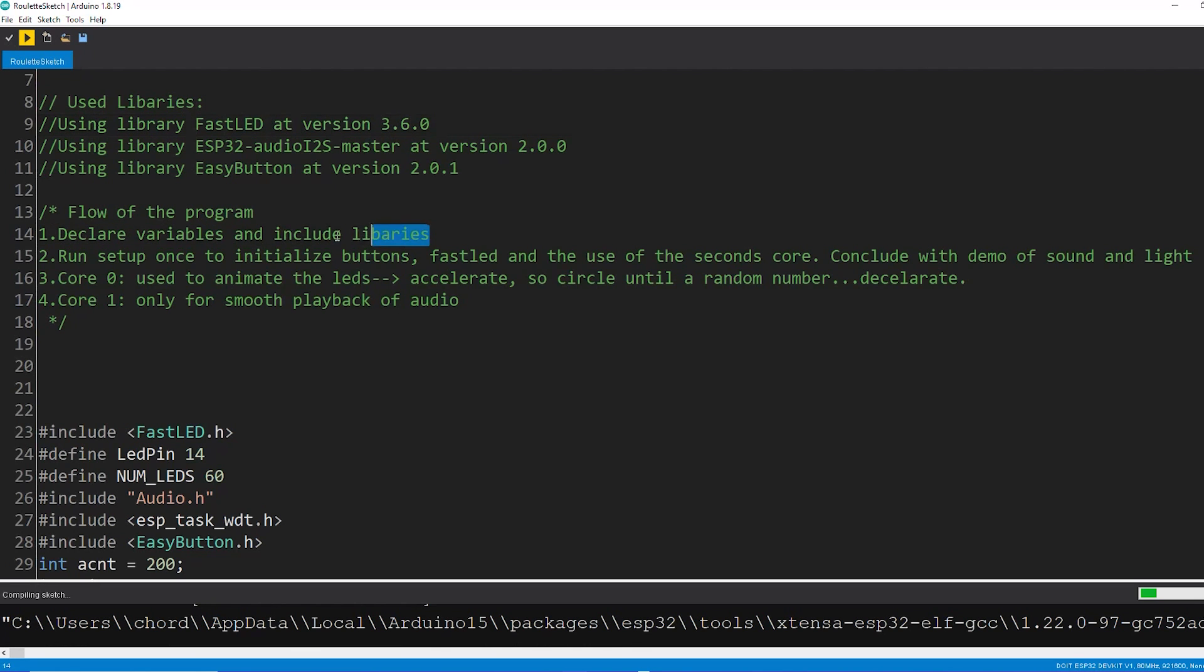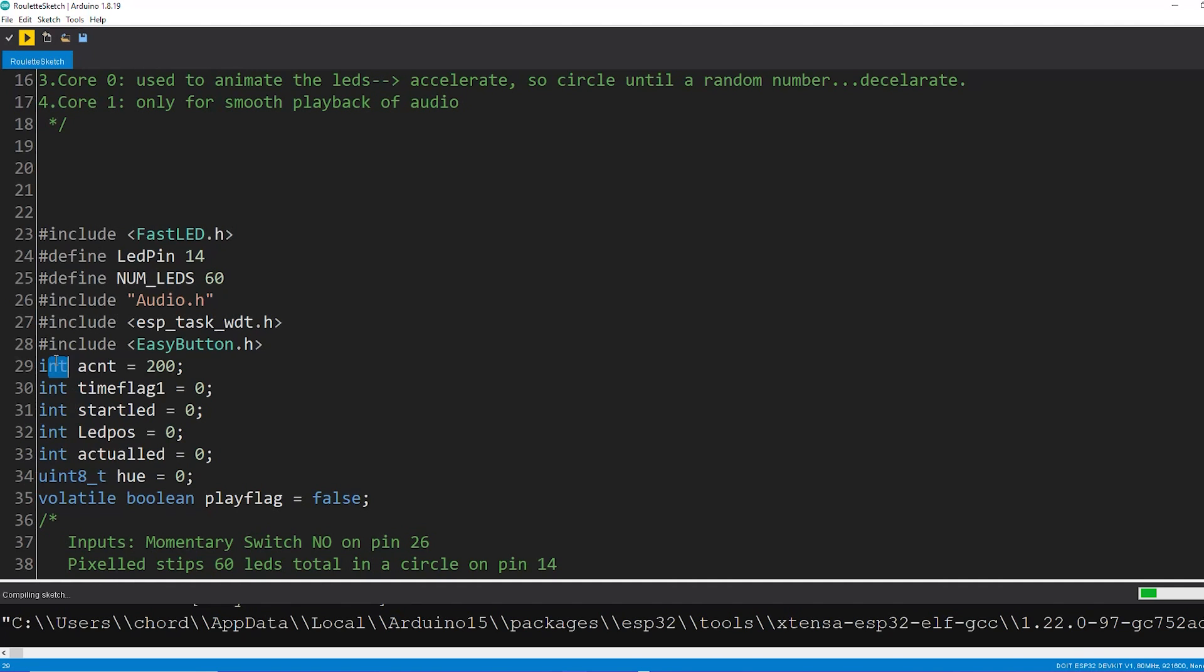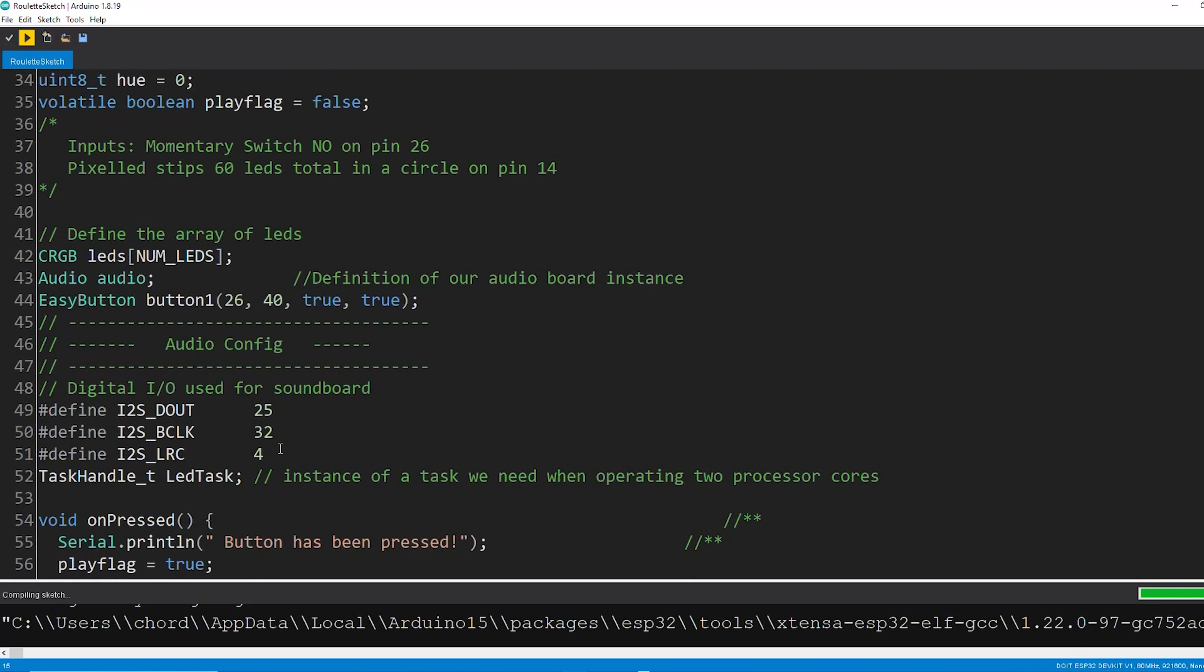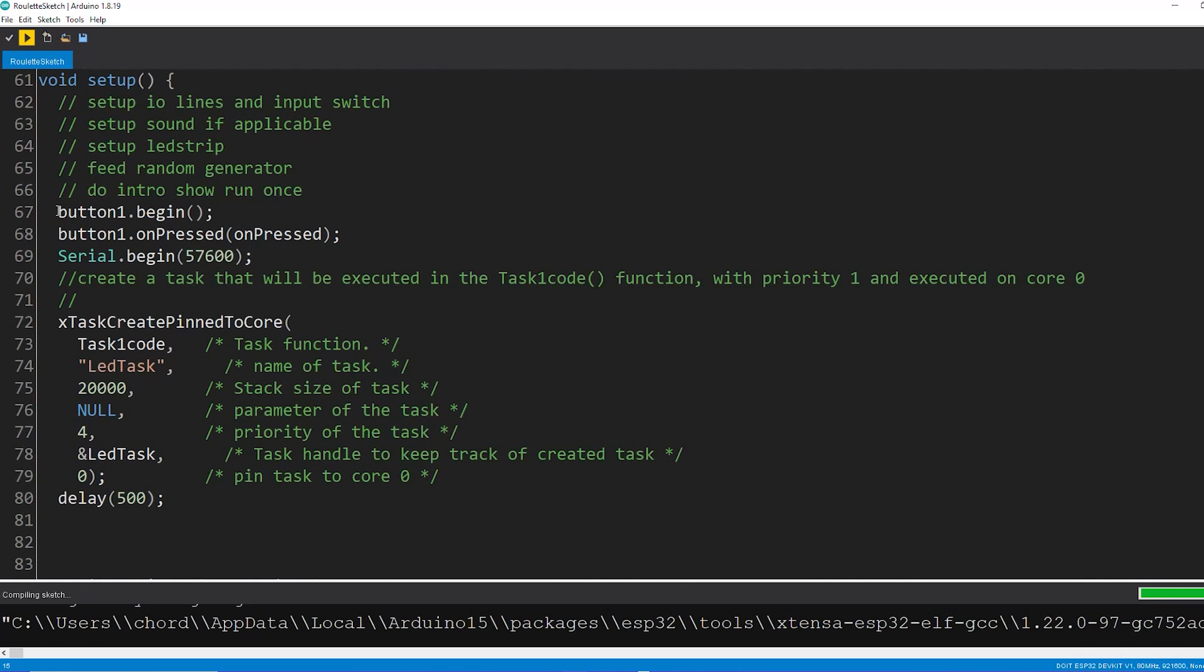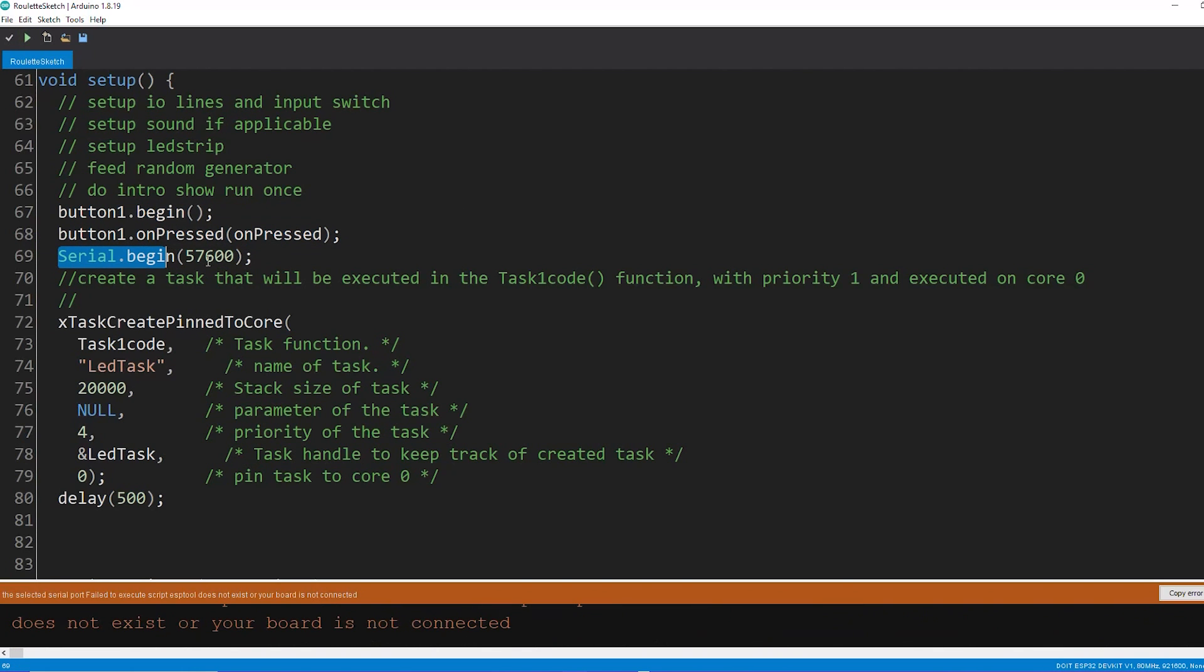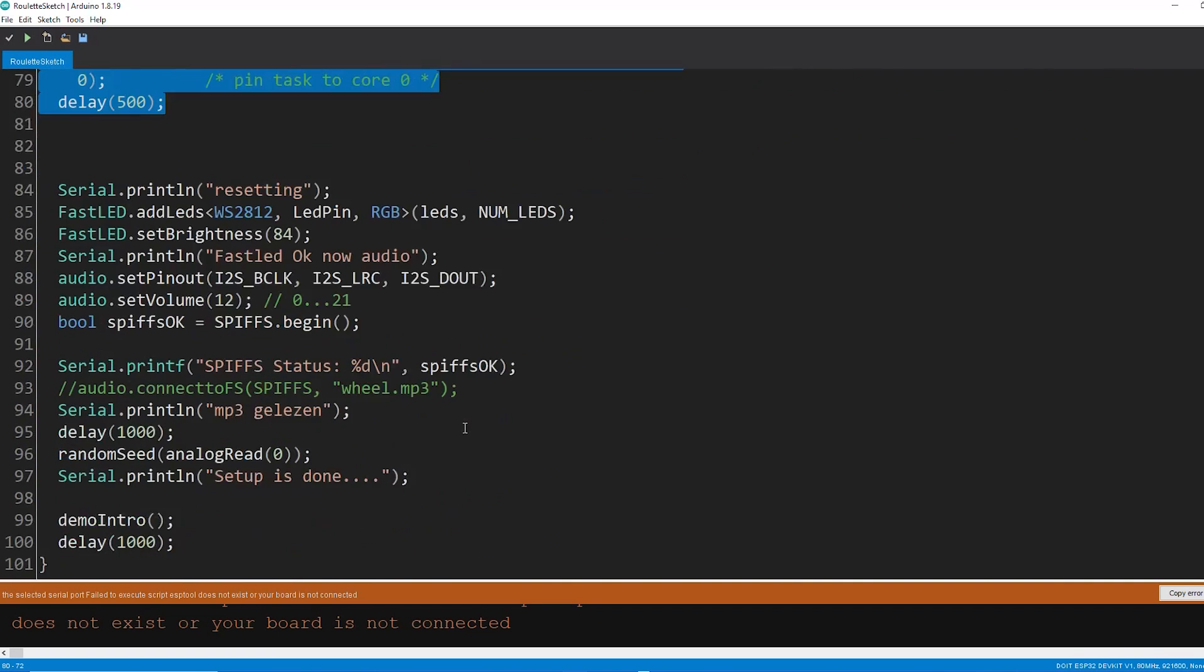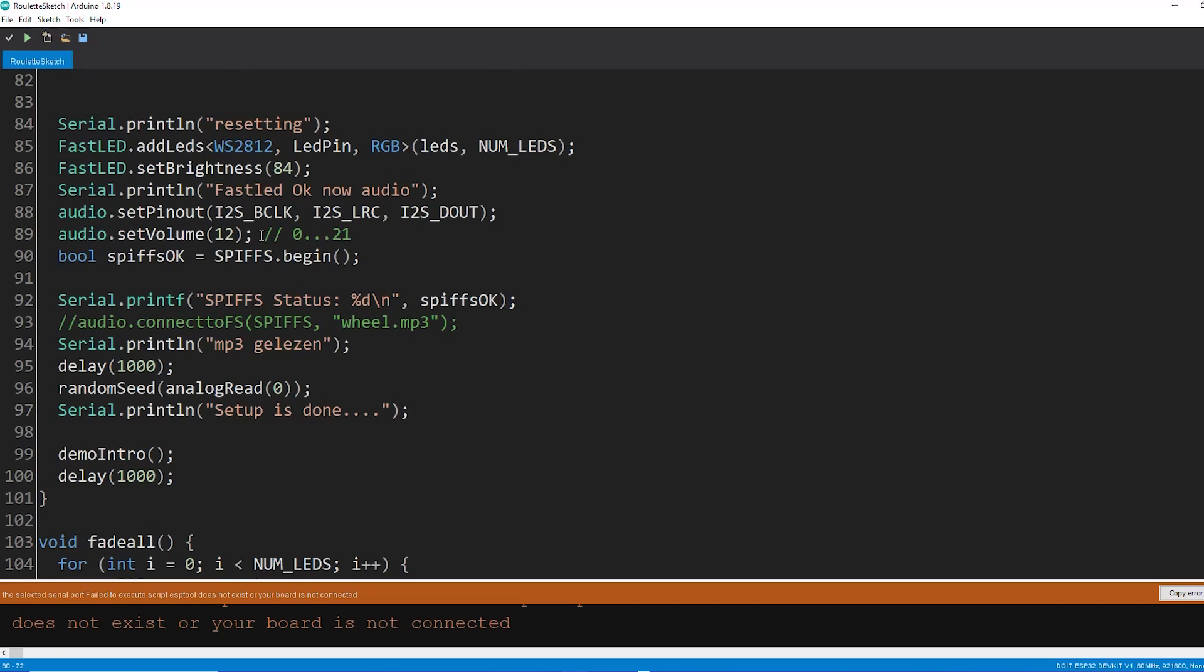Let me just walk you through the sketch a bit. Basically what I do is a few steps. First, I declare some variables and I include some libraries. Then of course I run setup once, and during that setup there's a few things I'll be doing. I will initialize the button, initialize the serial port, and this one is very important - I define a specific task for the second core, because the ESP32 is dual core. I'm using one core dedicatedly to just play audio, and I don't want anything to interfere when I play audio so the audio sounds smoothly. With the other core, I will do the LED animations.